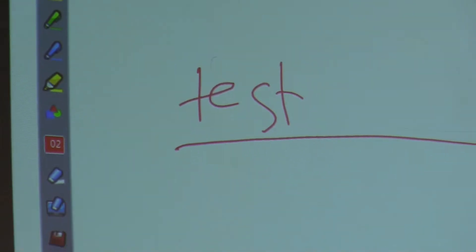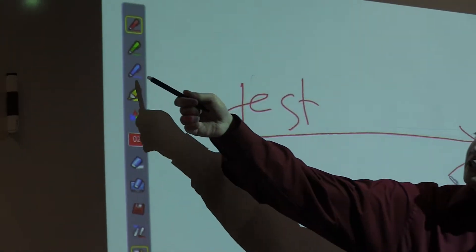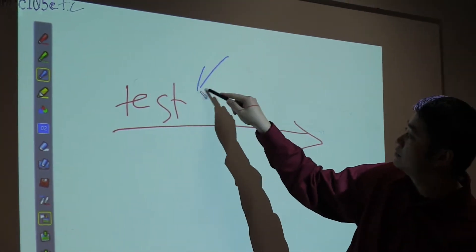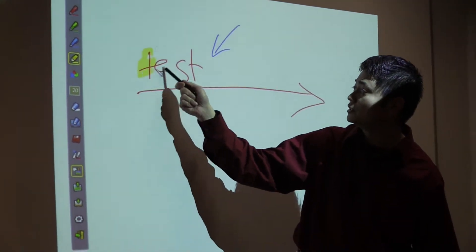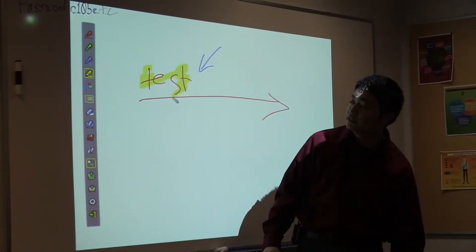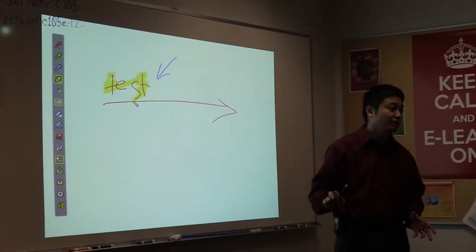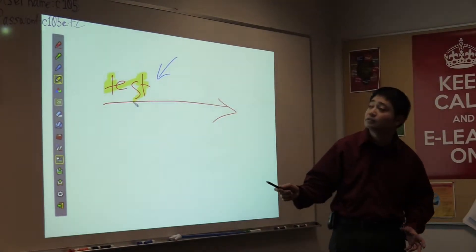And then just start choosing a pen. You've got different colors that you can choose from. You've got a highlighter tool, which lets you highlight what you've done. And again, if you have a PDF document up, you can highlight parts of the document if you wanted to.